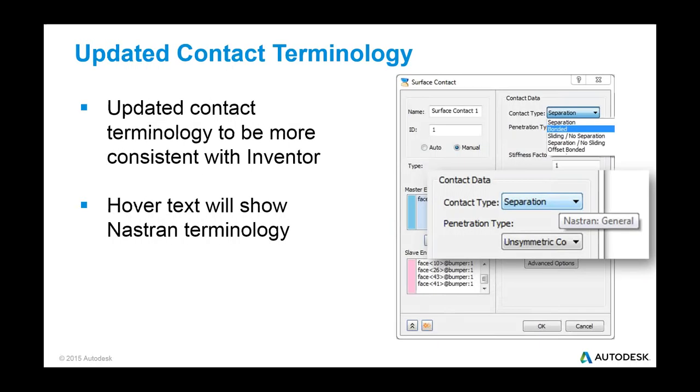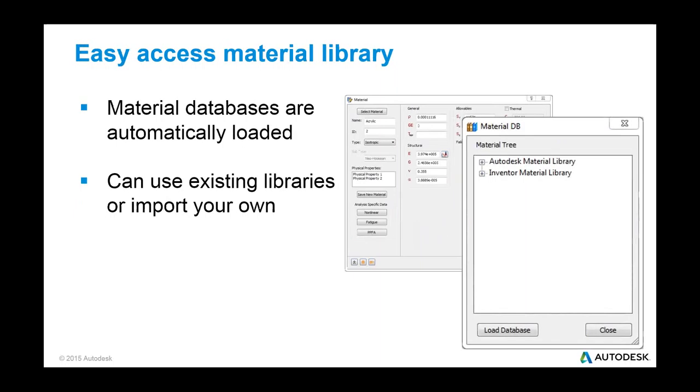Another little thing that we did is we updated the contact terminology. So we realized that we've got a lot of folks that are using Inventor Professional and other simulation tools. And we've kind of got a standard terminology that we use for contact. And we wanted to make sure that this was similar. So we switched it over. You see the separation bonded. The different sliding, no separation. And for the Nastran folks that are used to the old Nastran terminology, there's hover text. So as you hover over it, it'll actually tell you what that originally was. We also made the material dialog a little bit easier to access. So that way you can import materials from the material library. You can also use the load database button to create your own custom material library or edit your own material library so you can have your own handful of materials that you like to use on a regular basis and just pull it in from there.